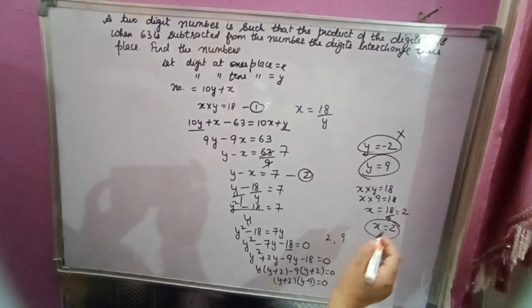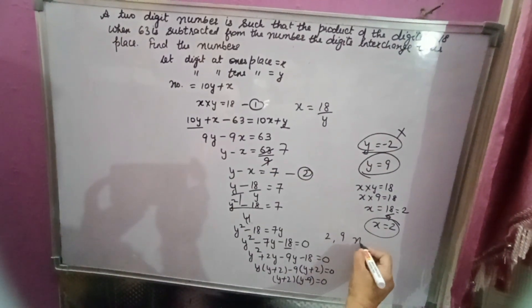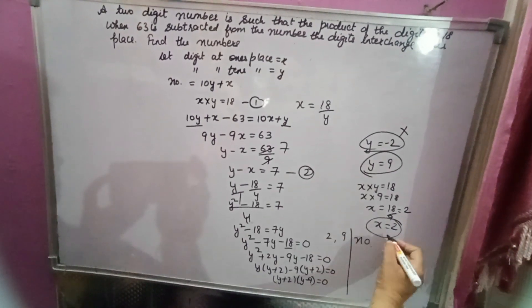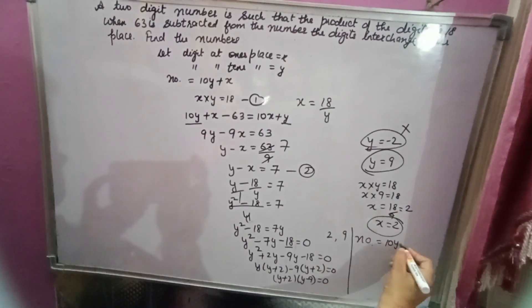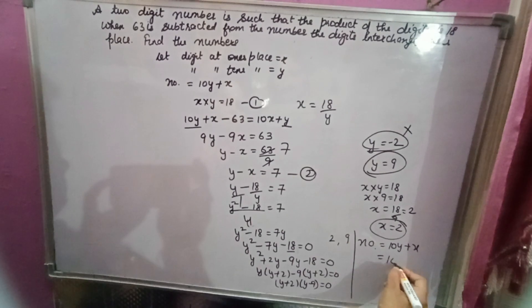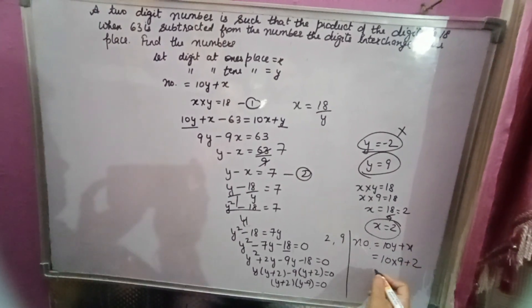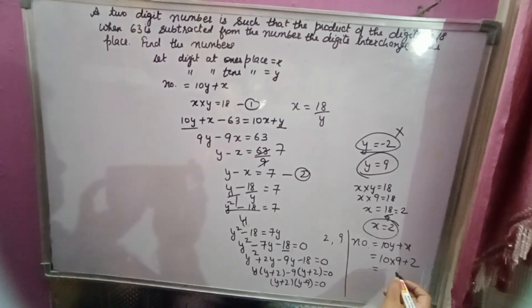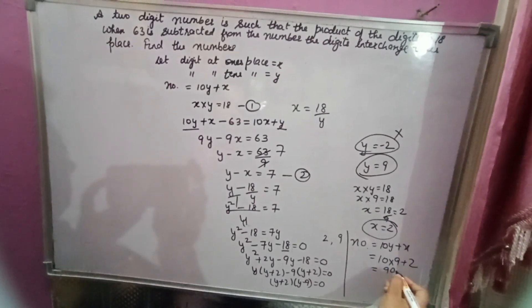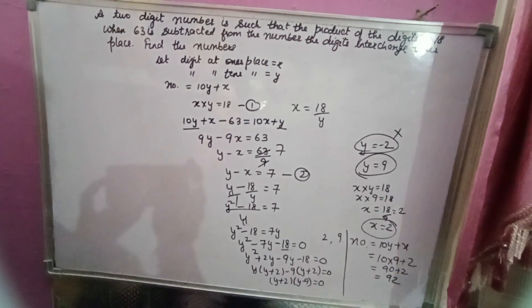Now find the number. The number is 10y plus x, which is 10 into 9 plus 2, that is 90 plus 2, which equals 92. So the required number is 92.